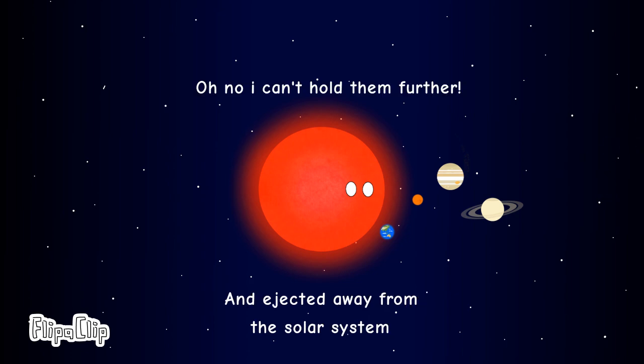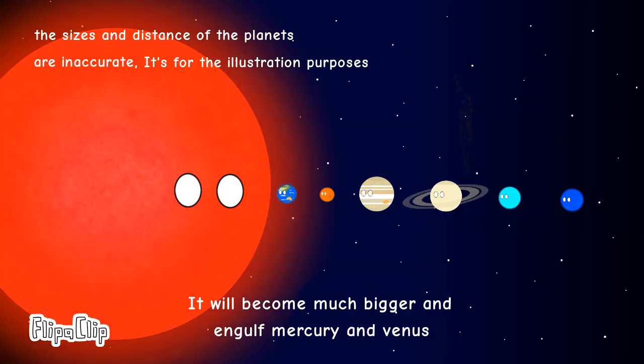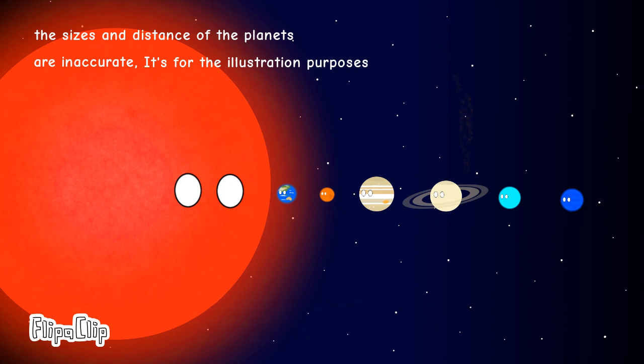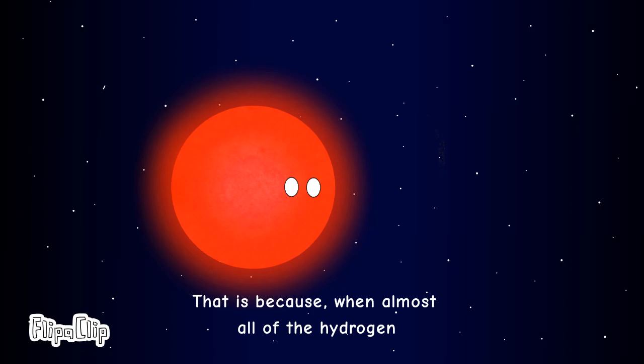Planets will be ejected away from the solar system. If our star becomes a red giant, it will become much bigger and will engulf Mercury and Venus. Why does the sun expand into a red giant? That is because...